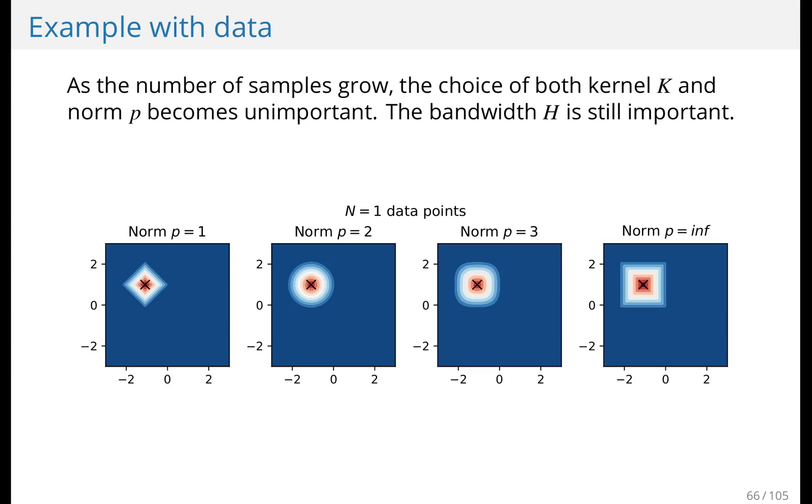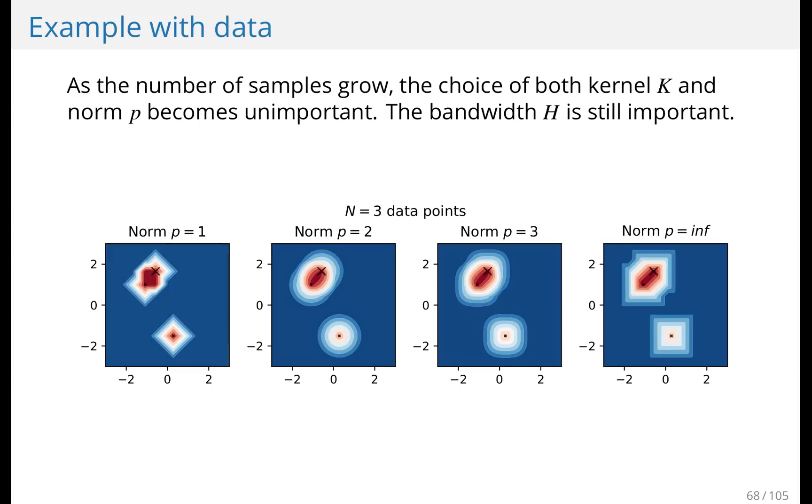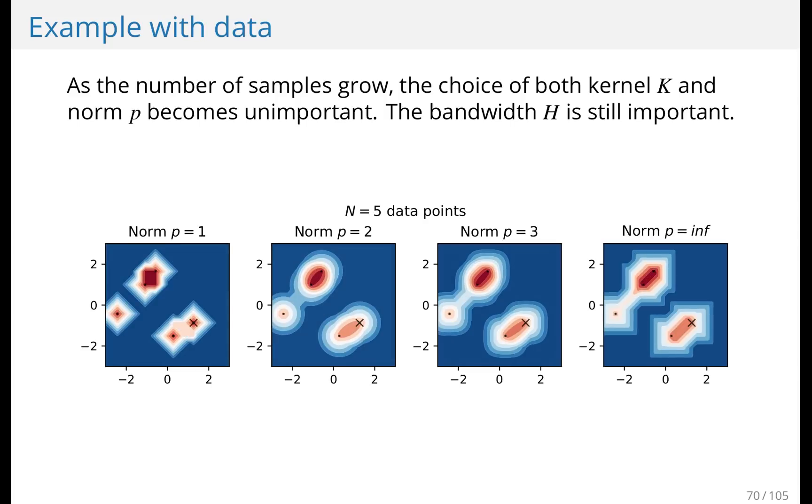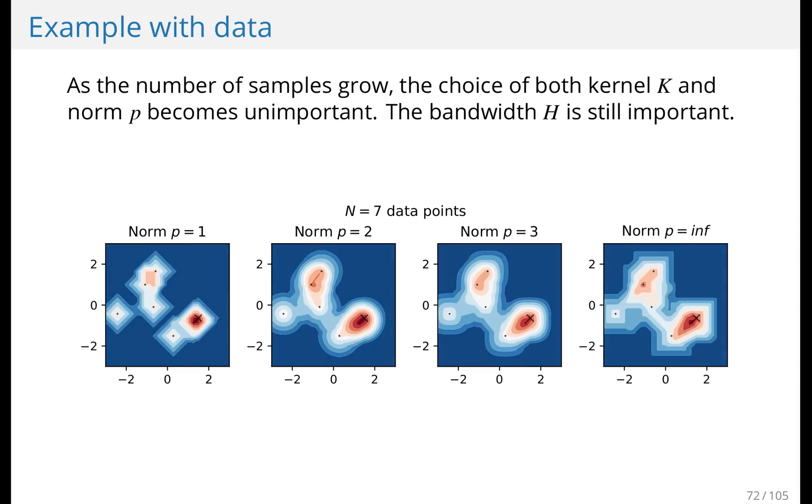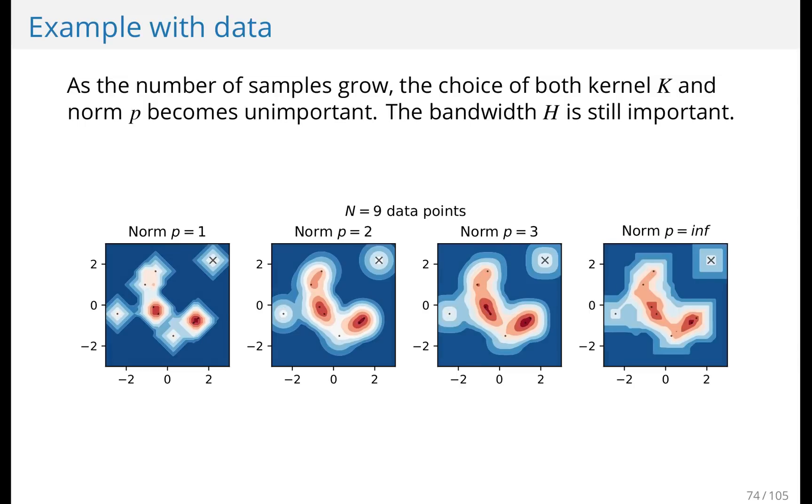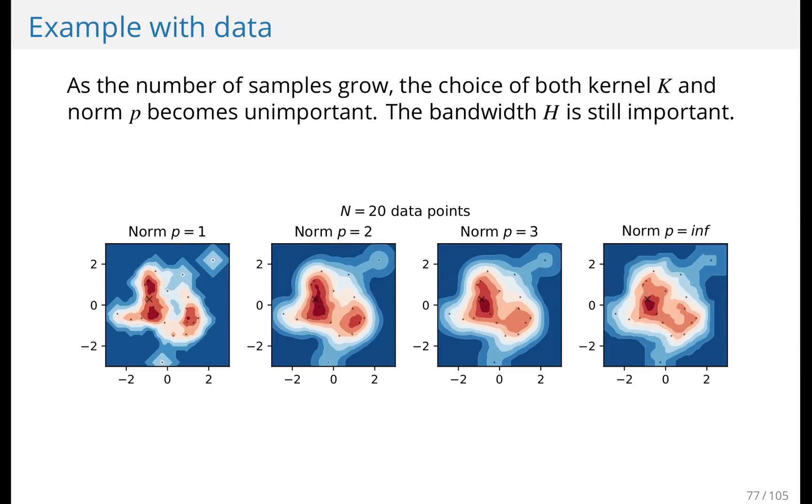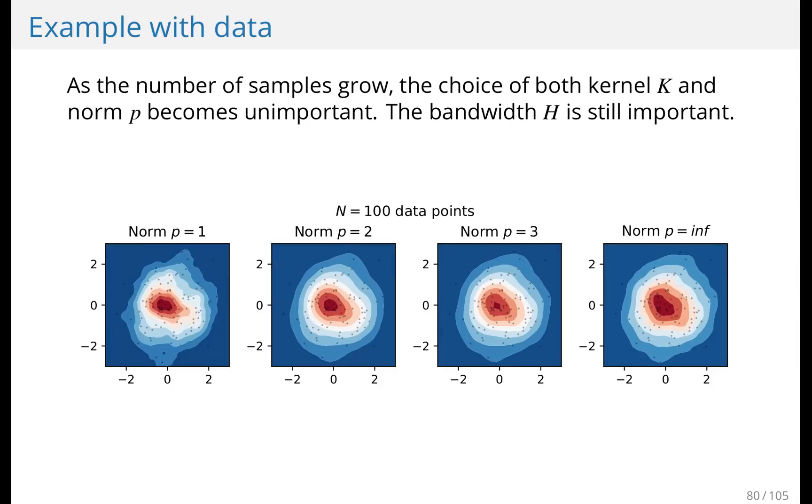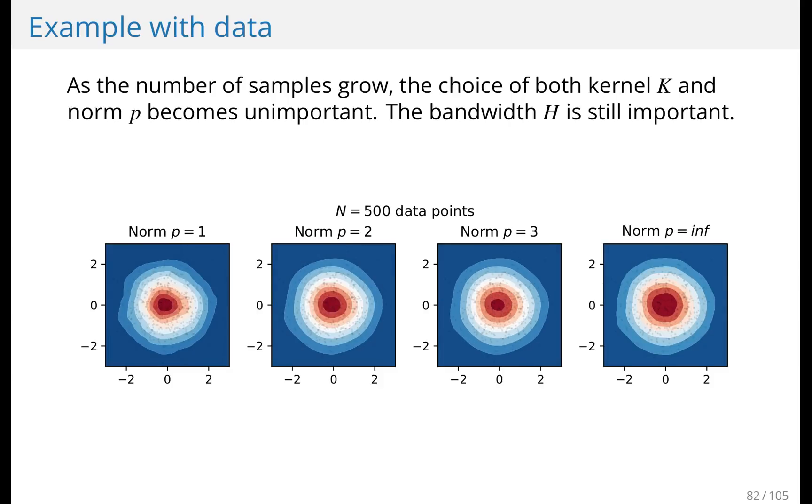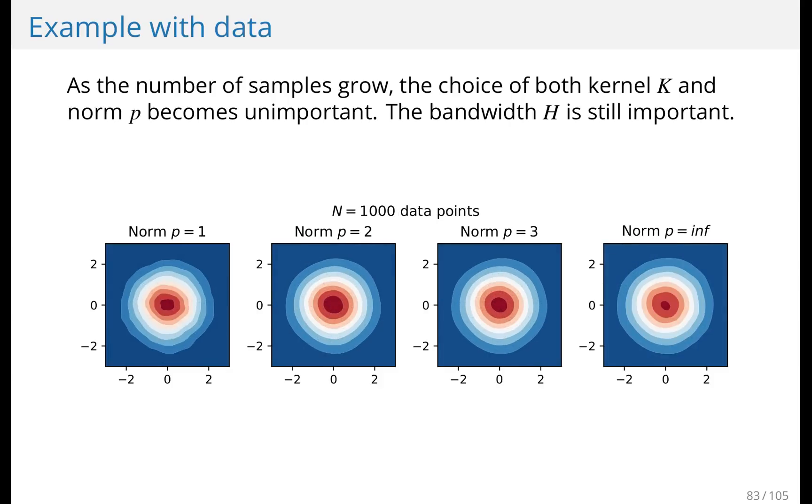Let's look at what happens when we have some data. Now, you're going to see that as the number of data points increases, the choice of kernel and the choice of P in the P norm doesn't really matter. It's going to look more and more similar. So let's add some data. Still looks pretty different. But as we increase the data and work our way towards 1000 data points, you'll see that the estimates grow closer and closer. And in the end, it looks very much the same.